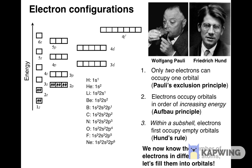For sodium, atomic number 11, the first ten electrons occupy the same orbitals as for neon. At this point, two electrons occupy each of the orbitals in the 1s, 2s, and 2p subshells. Therefore, according to Pauli's exclusion principle, no more electrons can be added to these subshells. According to the Aufbau principle, the eleventh electron must go into the orbital with the next lowest energy — the only orbital in the 3s subshell. The electron configuration for sodium is 1s² 2s² 2p⁶ 3s¹.